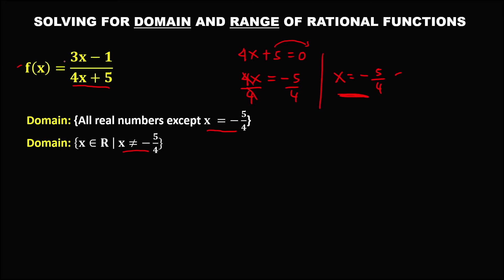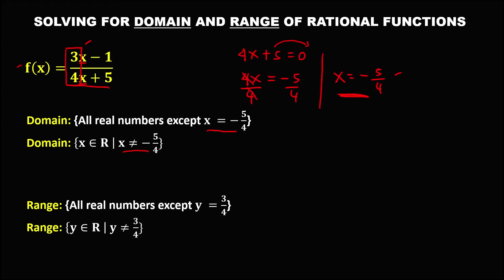Then to find the range, since we have variable x in the numerator and variable x in the denominator, take the numerical coefficients. Therefore, the range is all real numbers except y equals 3 over 4, or y is an element of real numbers such that y is not equal to 3 over 4.